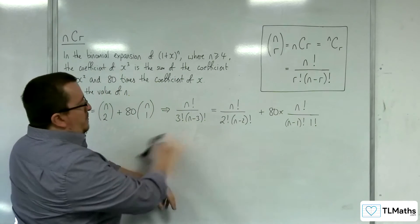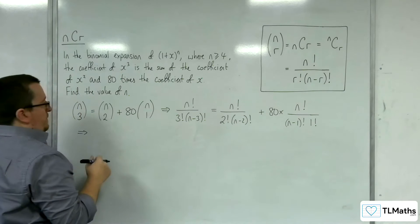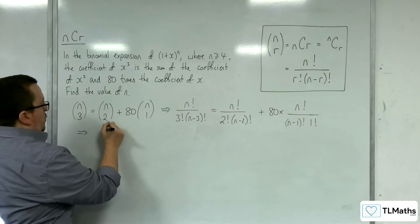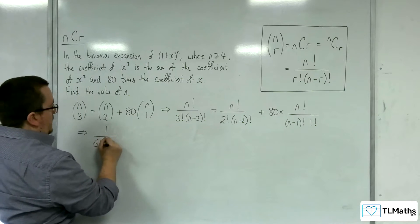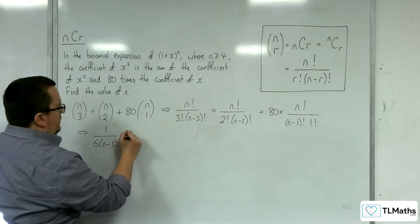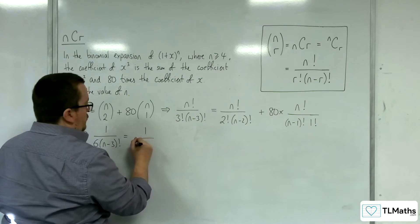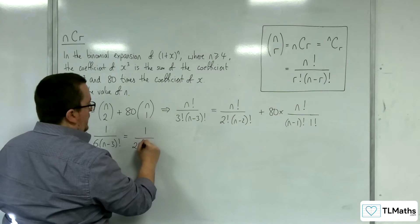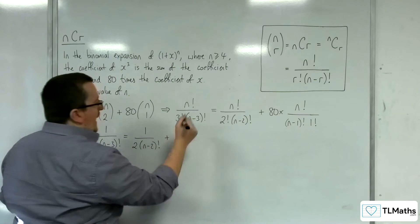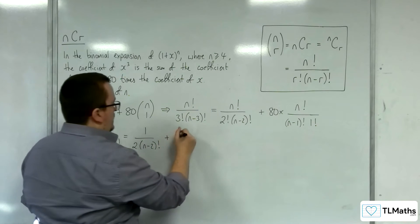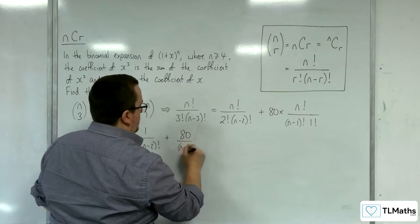I'm also going to simplify 3 factorial and 2 factorial. So I've got 1 over 3 factorial, which is 6, times (n-3) factorial, equals 1 over 2 factorial, which is 2, times (n-2) factorial, plus 80 over (n-1) factorial.